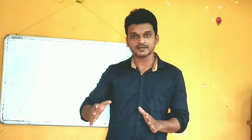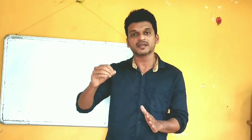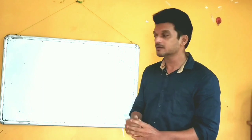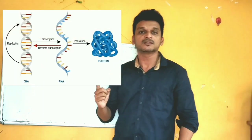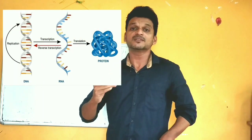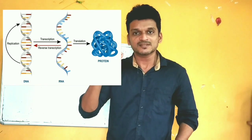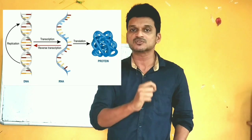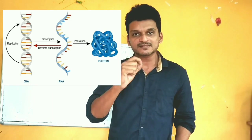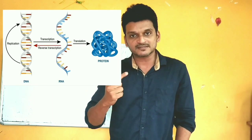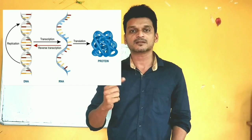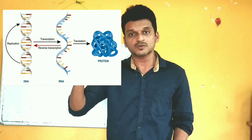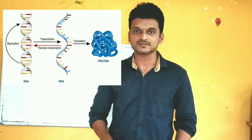RNAs are of three different types depending upon their function and their location. Our first type of RNA is messenger RNA. It is called messenger RNA because this messenger RNA reads the message on the DNA that is present in the nucleus of the cell, and by reading that message it forms a copy. That copy is the messenger RNA, which is then transferred to ribosomes, which will actually perform the process of protein synthesis.